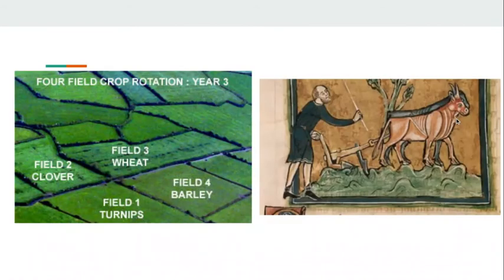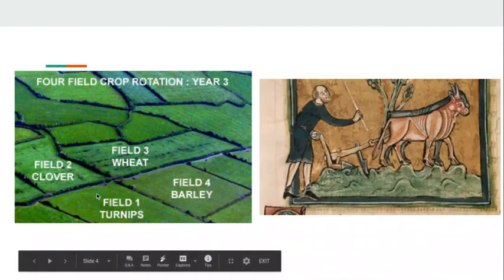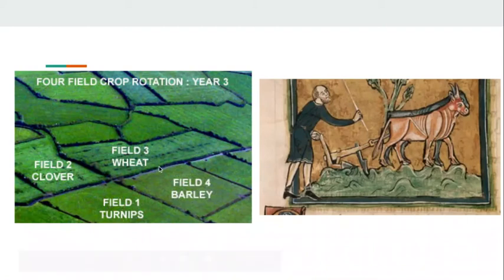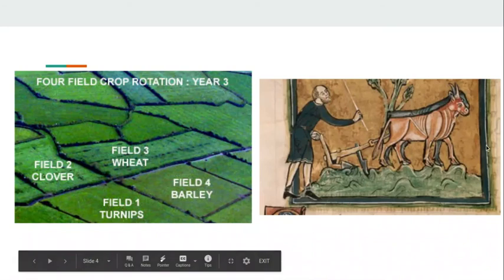Here are a couple of examples. Say you have four fields: one field growing turnips and clover that are actually replenishing the soil, then barley and wheat on two other fields. This diversification helps increase the nitrogen and other chemicals in the soil. And here's a picture of a plow hooked up to a couple of oxen — this relief was originally made in the 1600s or 1700s — showing how far Europeans had come in terms of farming.